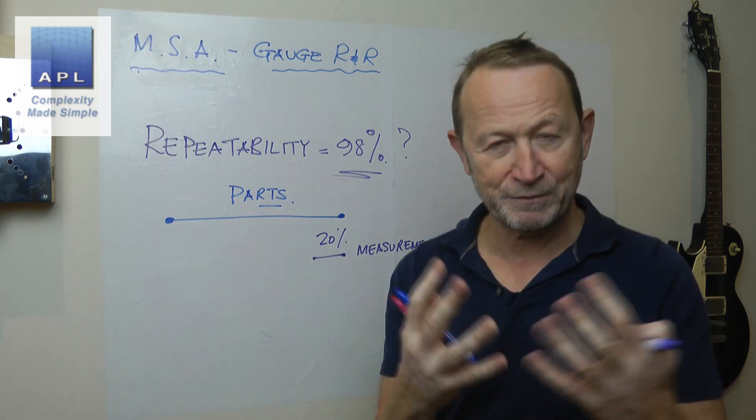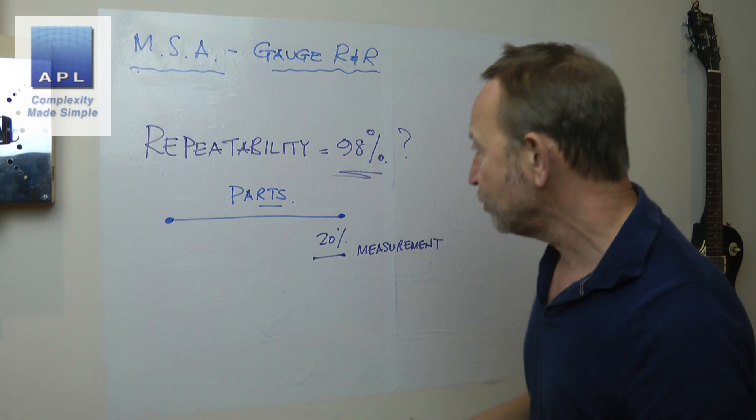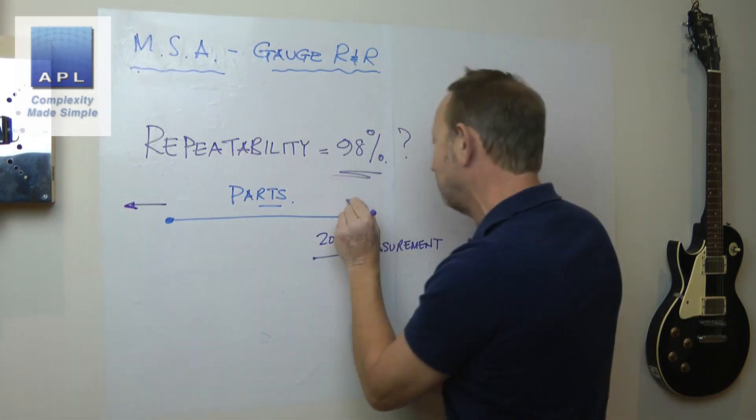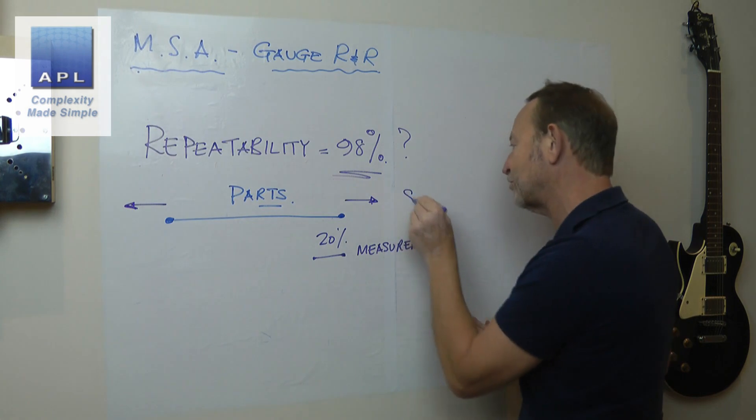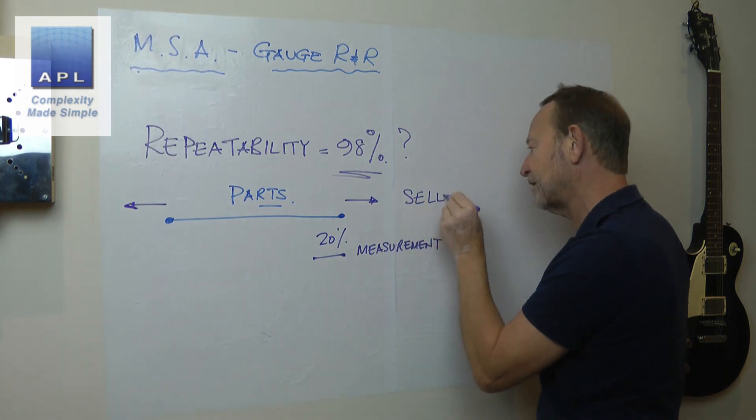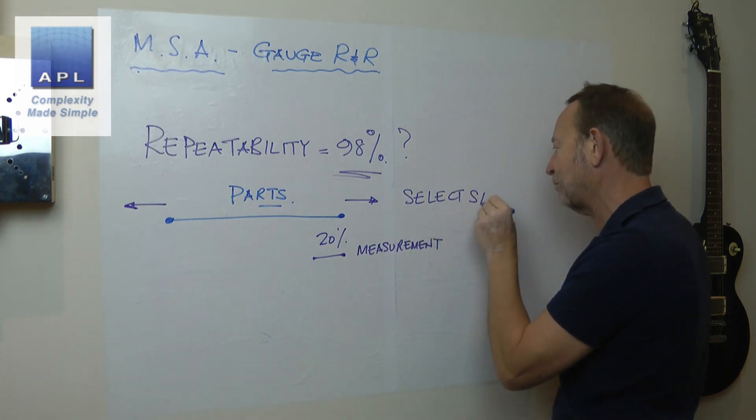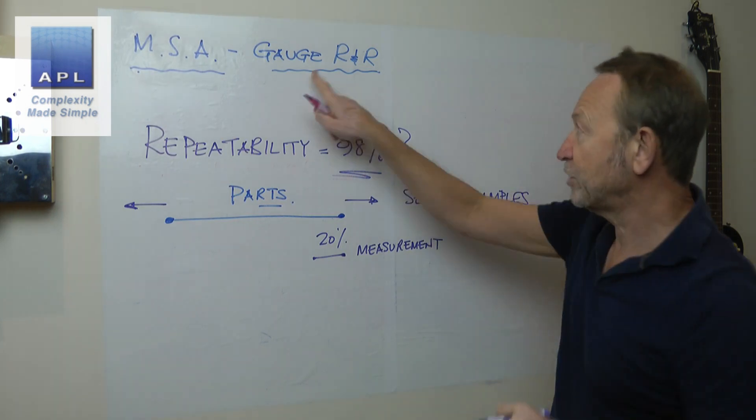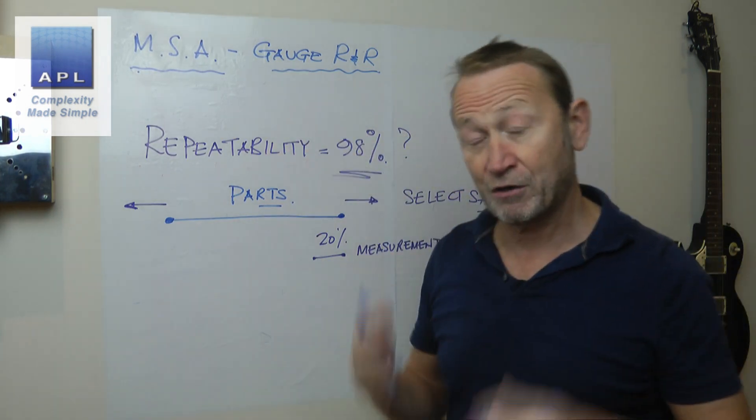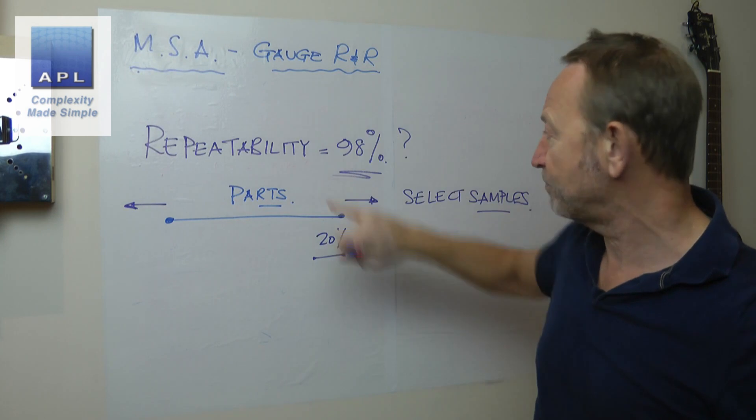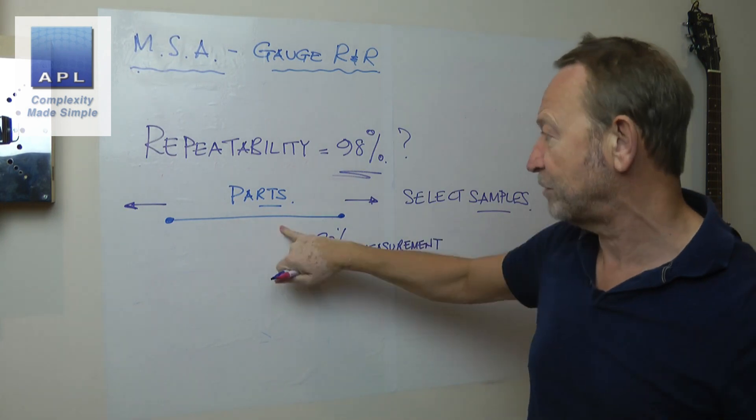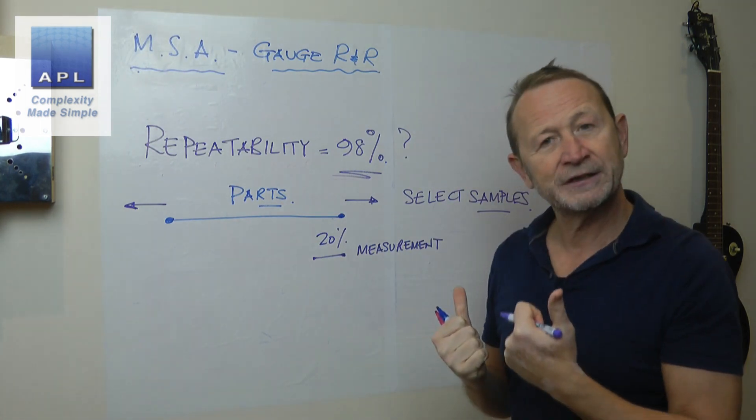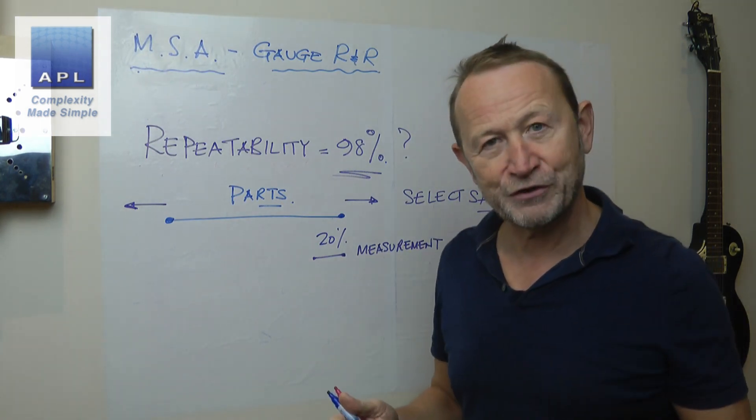So sometimes people do this in two ways. Sometimes what they do is they artificially make this bigger, by the way they select samples. So the way you select samples is really important, especially in the gauge R&R. Well, for both actually, but there's a particular thing you should do here when you select samples. So you could artificially make this look bigger, if you select the samples in the wrong way.